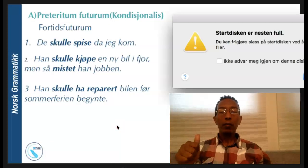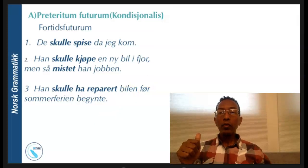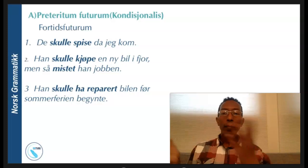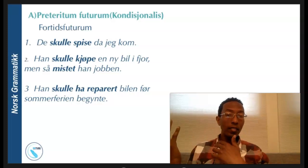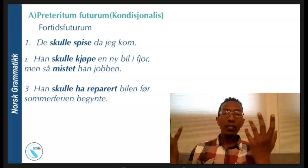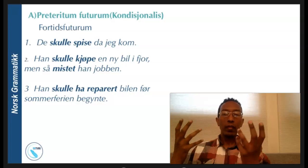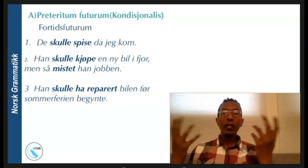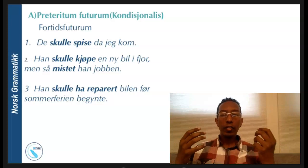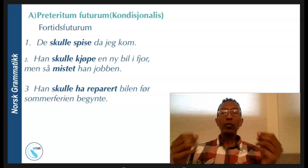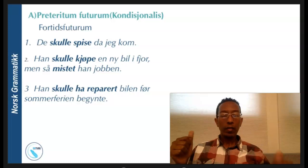The second main category is preteritum, or past future perfect. For example we can use: 'De skulle spise', 'De skulle komme', 'Han skulle kjøpe' — if you meant something. These are things that were planned to happen in the future but are viewed from the past. They indicate futurity but the actions were not finished or fulfilled — they were in the past but not accomplished in the way that was expected. This is how we use future in the past in Norwegian.